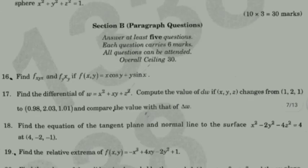Find f_xy and f_yx if f(x,y) = x·cos(y) + y·sin(x) — partial derivatives. Next question: find the differential of w = x² + xy + z². Compute the value of dw if (x,y,z) changes from (1,1,0) to (0.98, 2.03, 1.01) and compare the value with Δw.